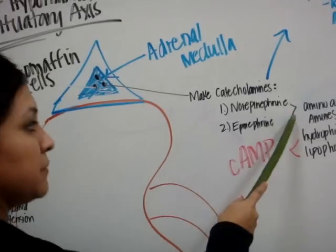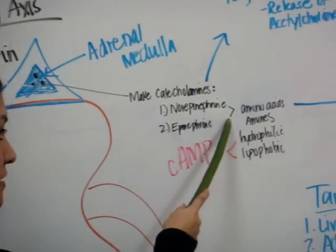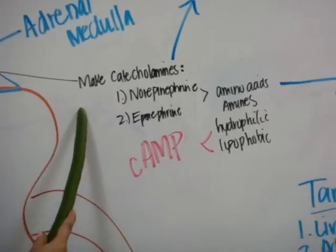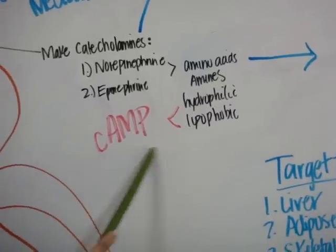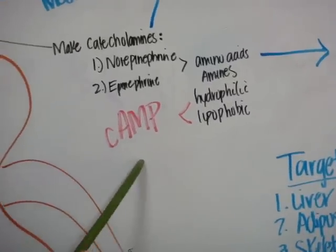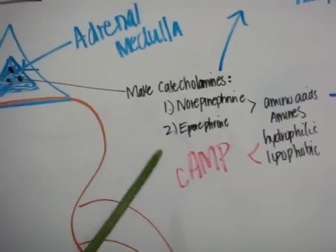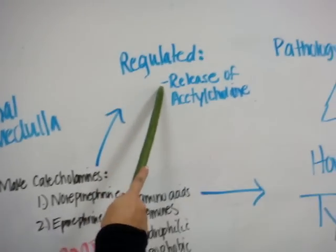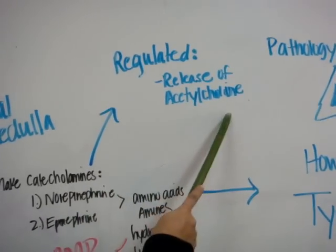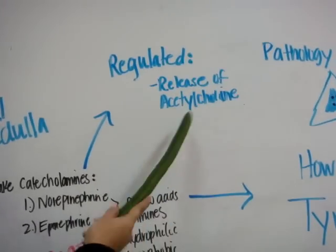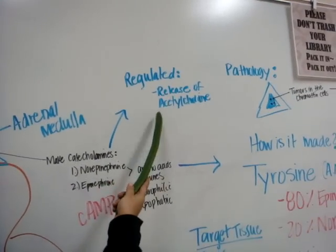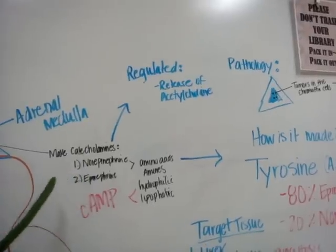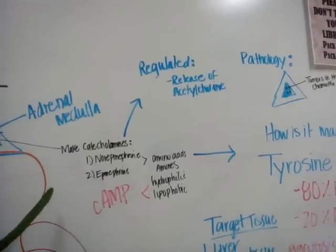These two are amines — amino acid-derived — so they're hydrophilic and lipophobic, meaning they use cAMP. They are regulated by the release of acetylcholine, so the more acetylcholine that is released, the more catecholamines are going to be released.